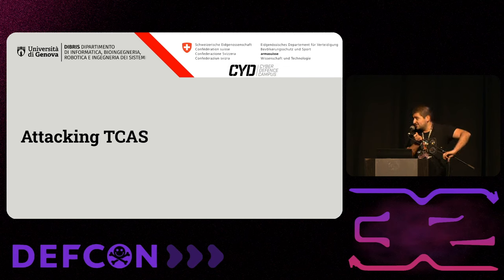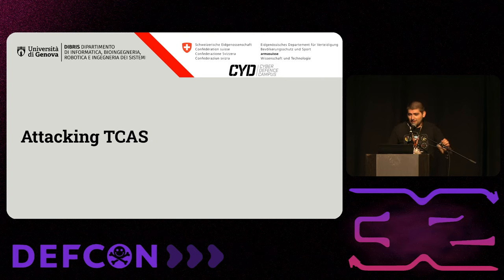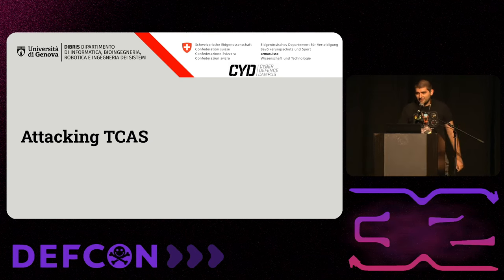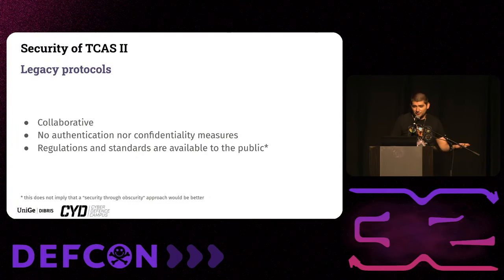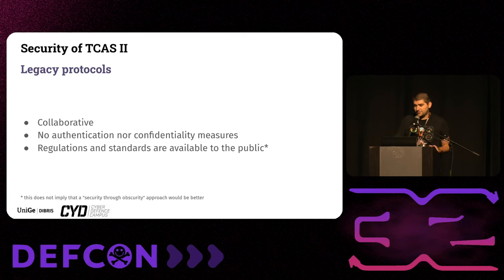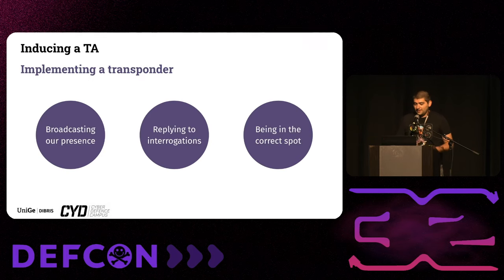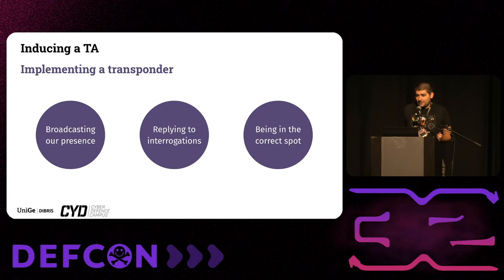Now the fun stuff begins. It's a protocol from 1997 — it's collaborative, it's in the clear, there is no encryption, no PKI, nothing — so it's insecure, we already know that. The first attack you're going to see is inducing a Traffic Advisory. It's a simple concept, but you need to implement the 1,800 pages of standards required to do so.